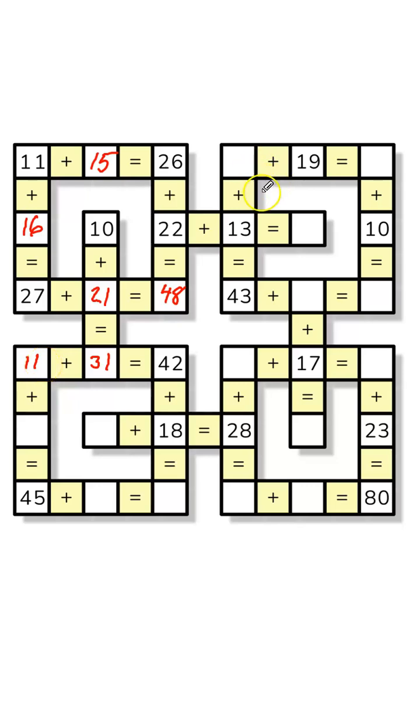Moving up to the top right corner because I'm running out of things over here. That and I just like doing it that way. It's going to be 30 plus 13 equals 43, 30 plus 19 equals 49.